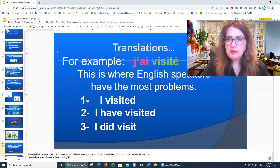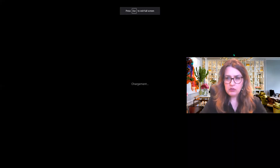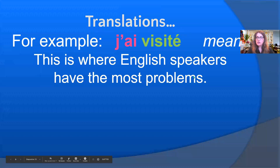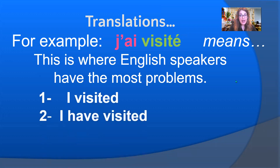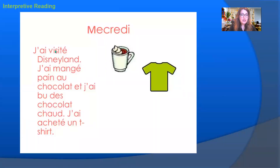For translations, j'ai visité means: I visited, I have visited, and I did visit. All these past forms of 'to visit' are translated in French with the passé composé. For example: mercredi, j'ai visité Disneyland; j'ai mangé du pain au chocolat; j'ai bu des chocolats chauds; j'ai acheté un T-shirt — all the things I did when I visited Disneyland.